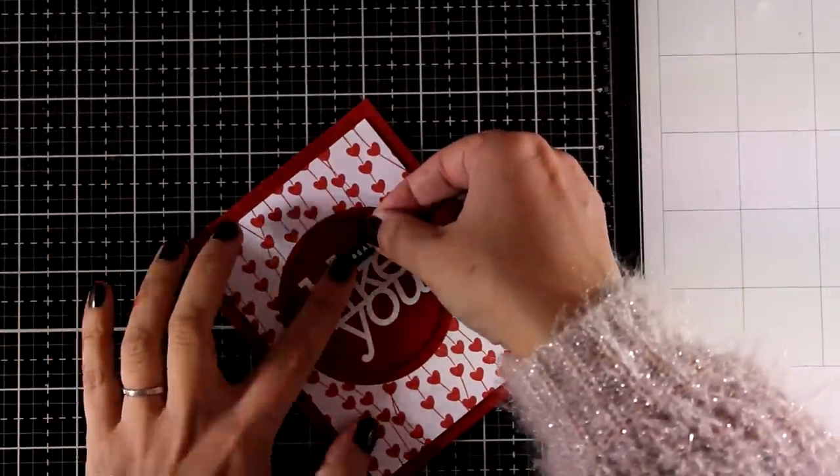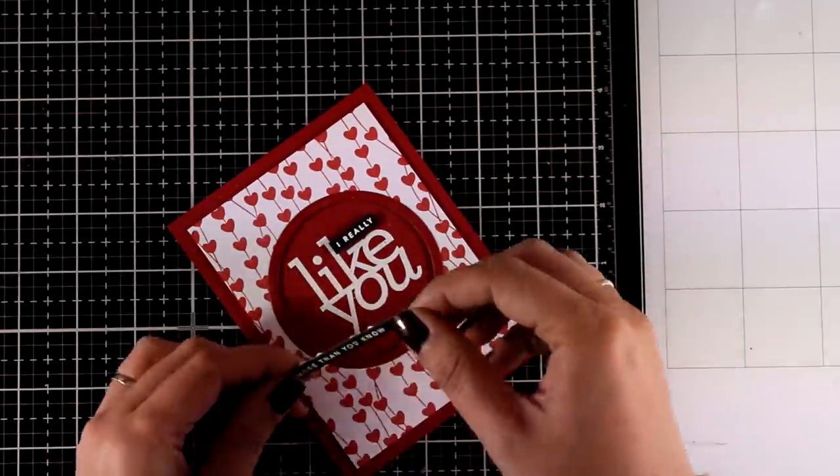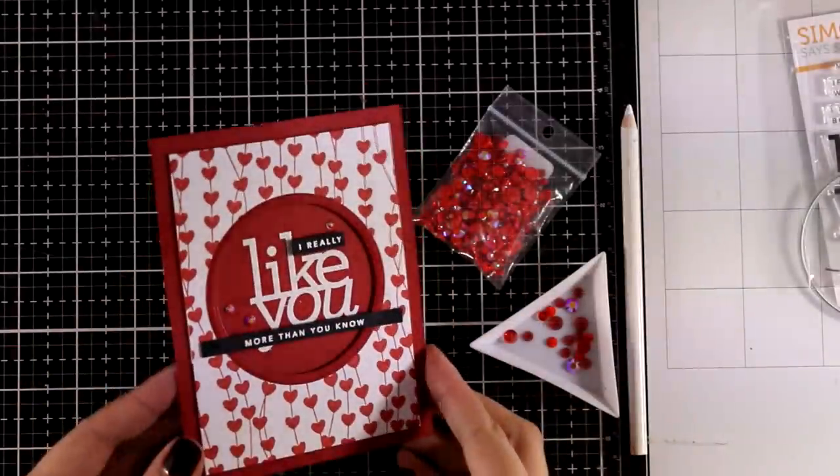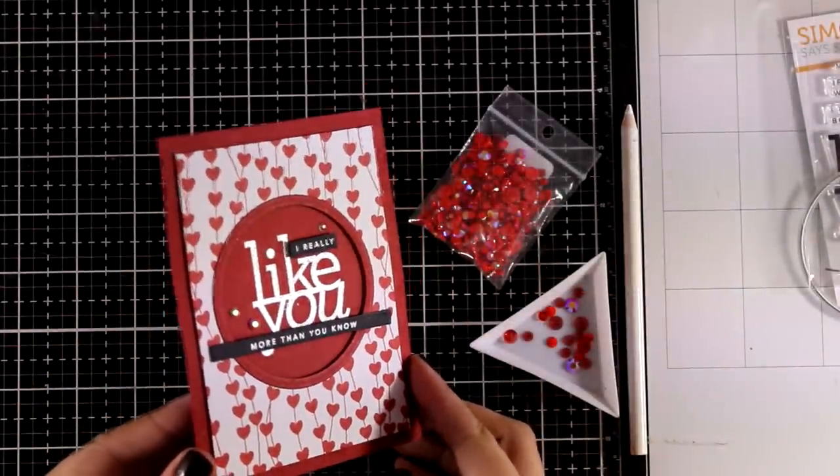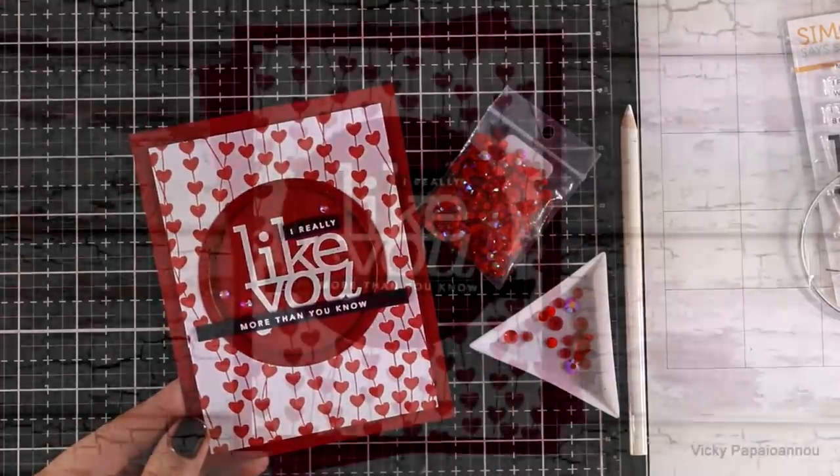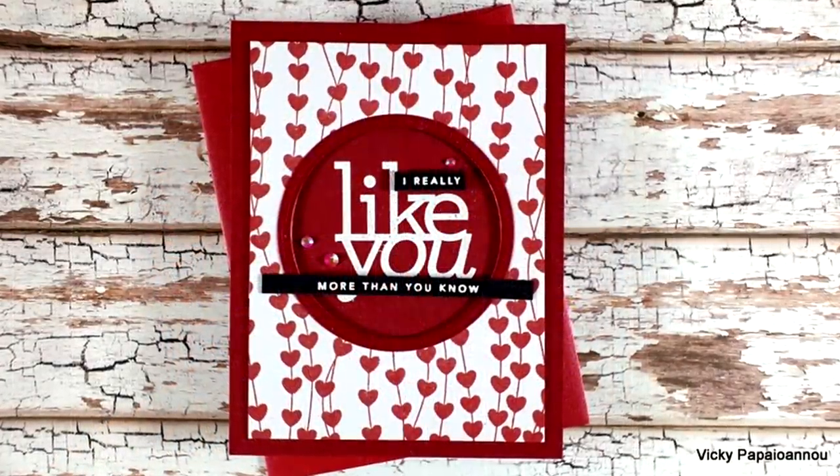I added tiny little pieces of foam tape at the back so all these sentiments are raised and I'm going to put them in place. To finish it off I used three tiny little red gems and I absolutely love the result. I think this makes the perfect Valentine's Day card.